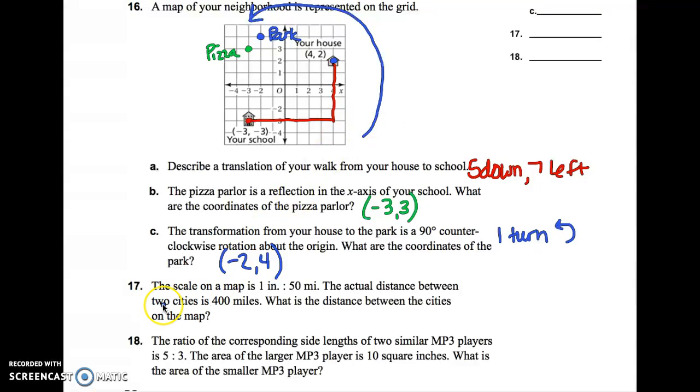And then number 17 says, the scale on a map is 1 inch is 50 miles. The actual distance between two cities is 400 miles. What is the distance between the cities on the map? So, again, we want to set up a proportion for this one. So, the first thing they give me is 1 inch is 50 miles. That's going to be my first fraction. Equals. The other piece they give me is 400 miles. Now, you have to line up miles with miles, inches with inches. And I want to know how many inches it would represent on the map. So, that's going to be my x. And then, just like we did up on, I think it was 11 and 12, cross multiply.